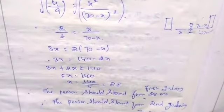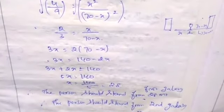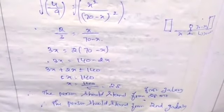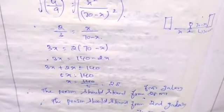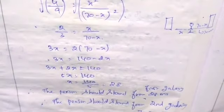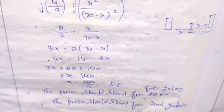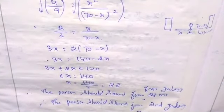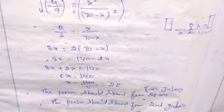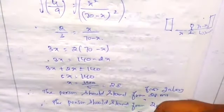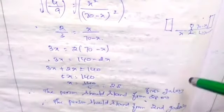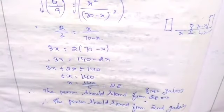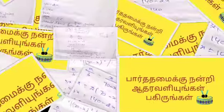That is our distance. The person should stand 28 meters from the first gallery and 42 meters from the second gallery. That is our answer.